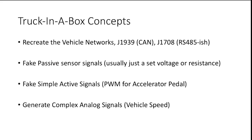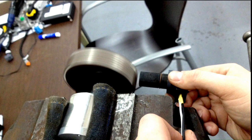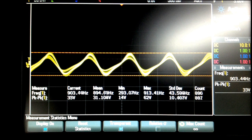The concept of the truck in a box: we wanted to recreate the vehicle networks including J1939 and J1708. J1939 is built on CAN; J1708 is kind of RS-485, similar to J1850. It also fakes passive sensor signals — oil pressure, temperature sensors — because the ECM tends to freak out if those aren't present. Some more complicated signals include the accelerator pedal and vehicle road speed. There's a tone ring on the back of the tail shaft; it spins past a sensor generating a magnetic field. We hooked one up in a vise next to the sensor, characterized the signal, and can play it back to the ECM — we can actually put miles on the truck on a bench.